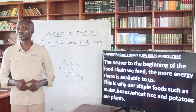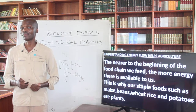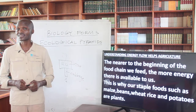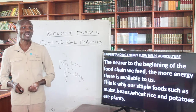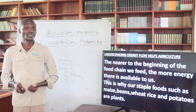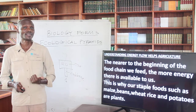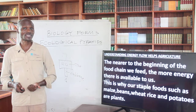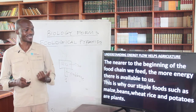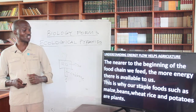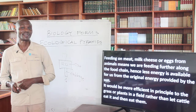This is why we find that our staple foods — such as maize, beans, wheat, rice, and potatoes — are actually plants. Bear in mind that plants are the primary producers; they are the ones converting sunlight energy into energy that we may require.